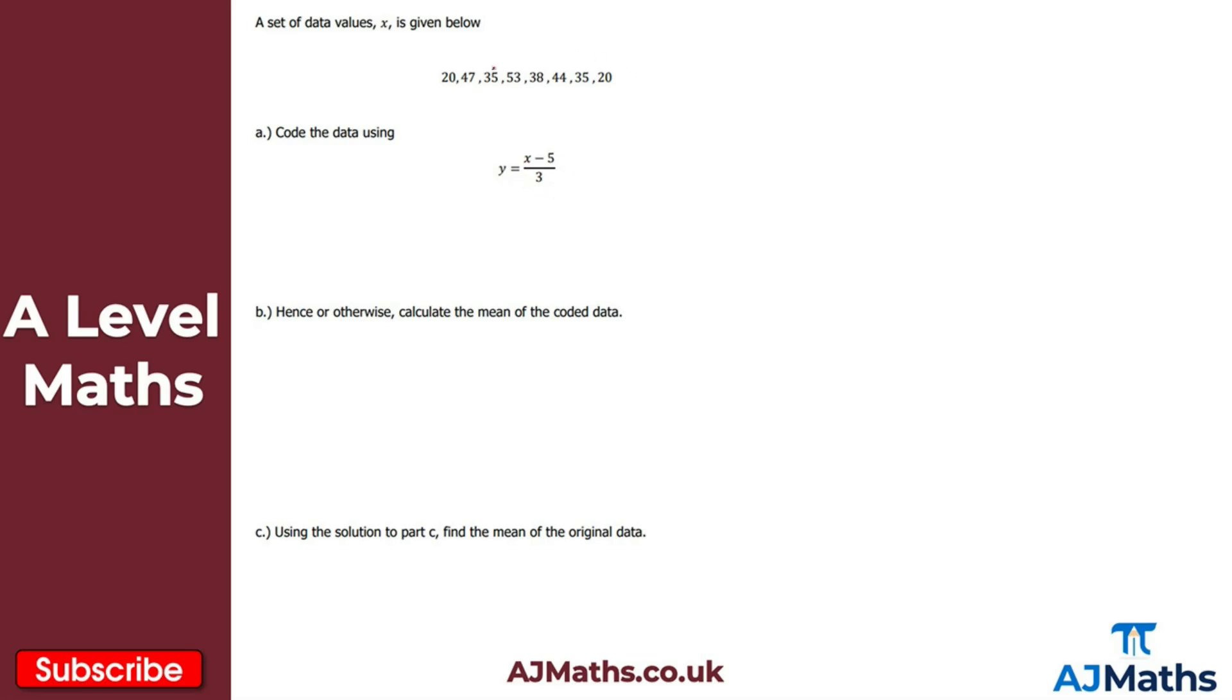What I need to do here is take each individual data value 20, 47, 45 and so on, subtract 5 and then divide by 3. So for example 20 minus 5 is 15, divide that by 3 and I get 5 there for my first data value for the coded data set.